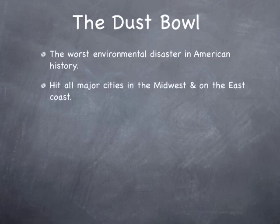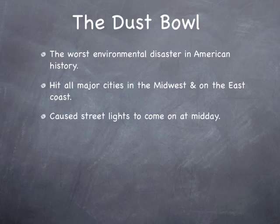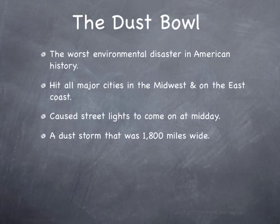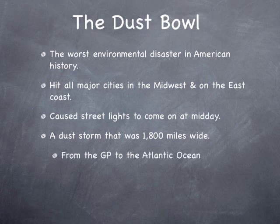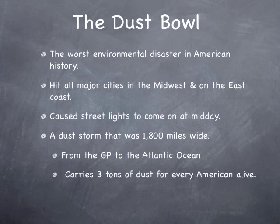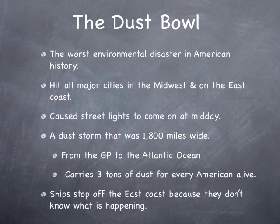It hit all major cities in the Midwest and on the East Coast. It caused street lights to come on at midday — the dust cloud and the dust storm was so dark that lights felt like they needed to come on. A dust storm that was 1,800 miles wide, stretching from the Great Plains to the Atlantic Ocean. It carried three tons of dust for every American alive. Ships stopped off the East Coast because they didn't know what was happening — they'd never seen anything like it, and the city of New York was being covered by an entire cloud of dust.